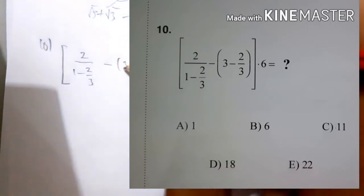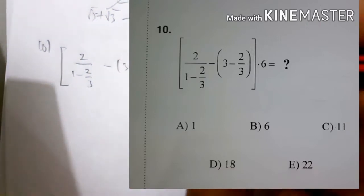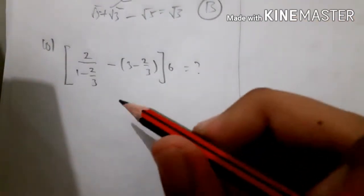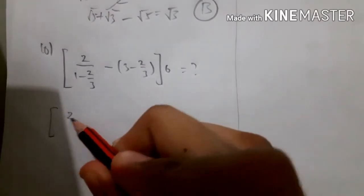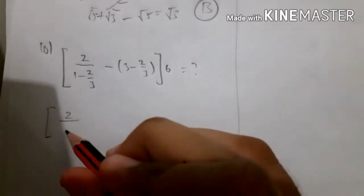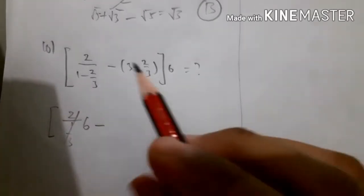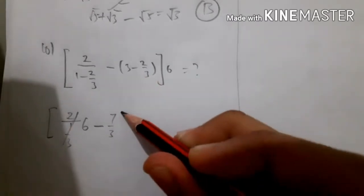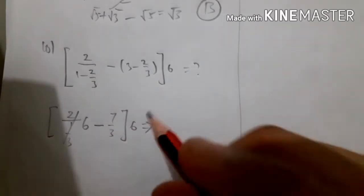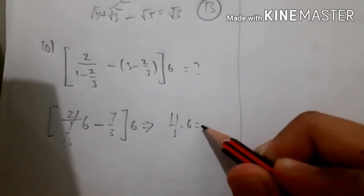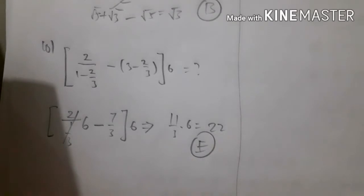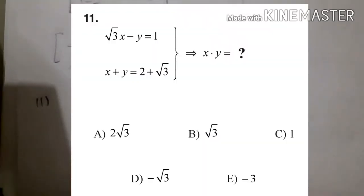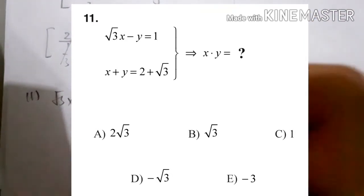For number 10: 2 over 1 minus 2 over 3, minus 3 over 2 over 3, times 6 equals 1. This is a simple calculation: 1 minus 2/3 is 1/3, which gives 6/3; minus 2 over 2/3 is 7/3 times 6, so that is 11/3 times 6, which is 22. So that is 22 over 3 times 6 minus 3 over 4.